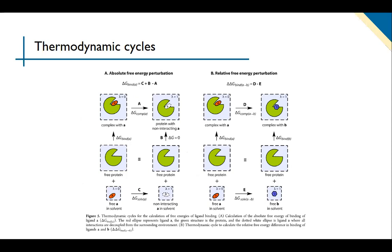There are two types of free energy calculations: absolute or relative. Type B from the previous slide is used for the absolute one, and type A is used for the relative one. Relative free energy calculations are more accurate than absolute ones. The reason is that the two states of the relative calculation look similar because both have ligands, but the two states of the absolute calculation do not.